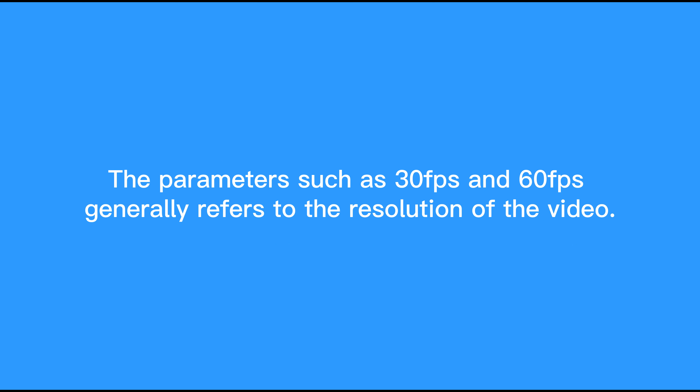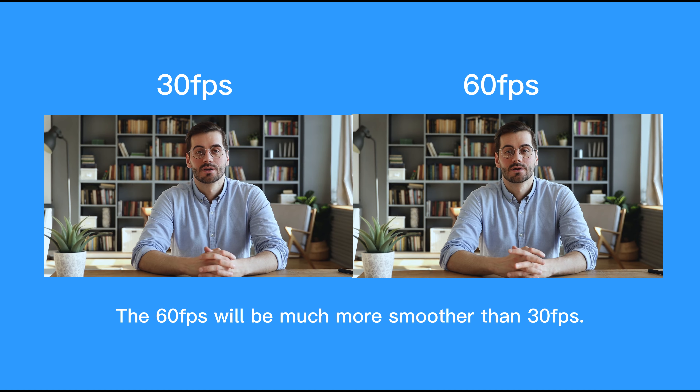Parameters such as 30fps and 60fps generally refer to the frame rate of the video. The 60fps will be much smoother than the 30fps.